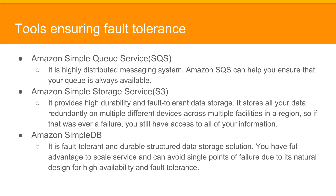Now we will learn about the tools ensuring fault tolerance. Amazon Simple Queue Service, also called SQS, is a highly distributed messaging system that can help ensure a queue is always available. Amazon Simple Storage Service, also called S3, provides high durability and fault-tolerant data storage. It stores all your data redundantly on multiple different devices across multiple facilities in a region, so that if there is ever a failure, you still have access to all of your information.